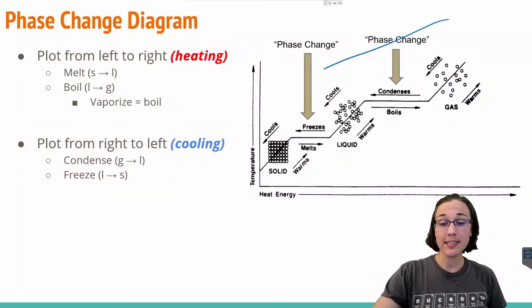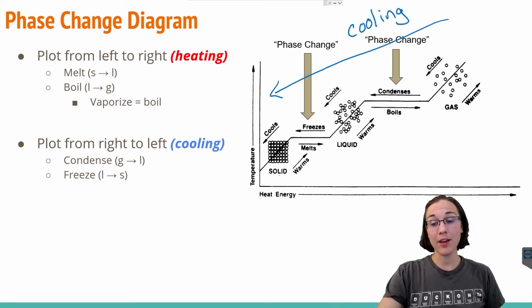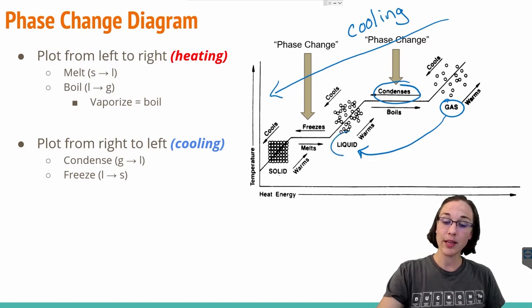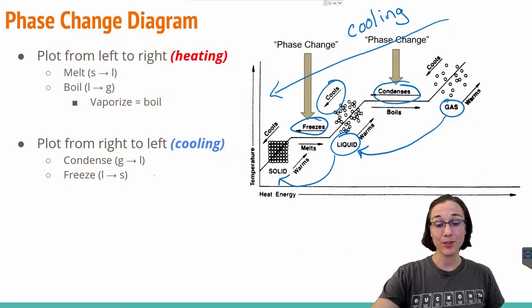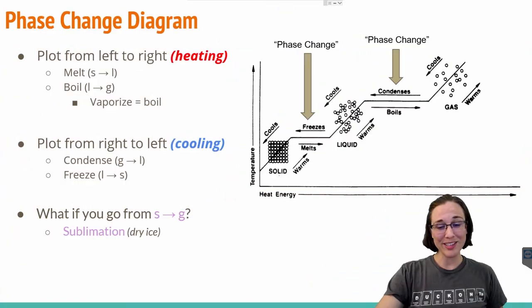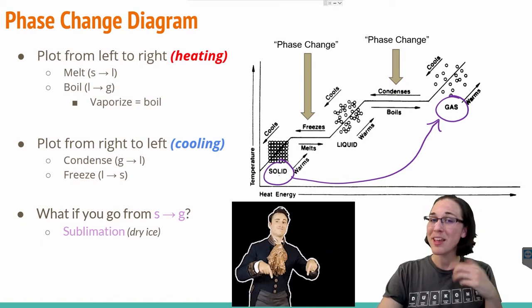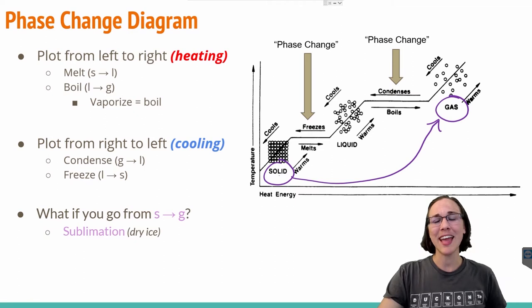If we go from right to left across this phase change diagram, we have cooling. To get from a gas to a liquid, the phase change is condensation or condensing. And to go from a liquid to a solid — cooling it down — we're going to freeze it. You may also remember this referred to as delta H of fusion from previous lessons. But what if we go directly from a solid to a gas and skip the liquid phase? That's like what dry ice does, and going from solid to gas is referred to as sublimation.